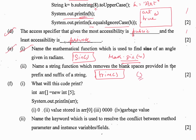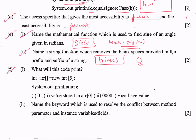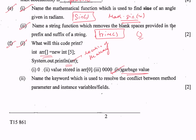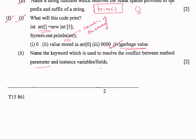Part f1: what will this code print? int[] ar equals new int[5]; System.out.println(ar). ar is basically the location of the array, or you can say it points to the first location in the array, so ar will print a garbage value because the location is always a garbage value and you cannot make any meaning out of it. Part f2: name the keyword used to resolve the conflict between a parameter and an instance variable field — this is the "this" keyword.